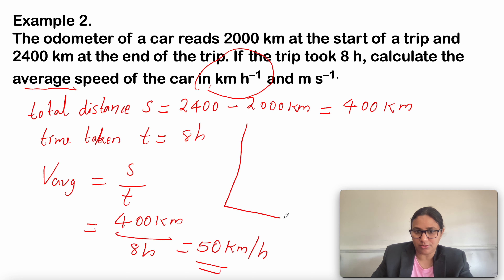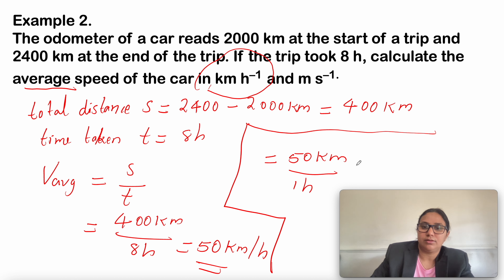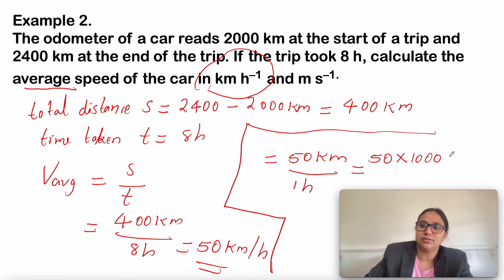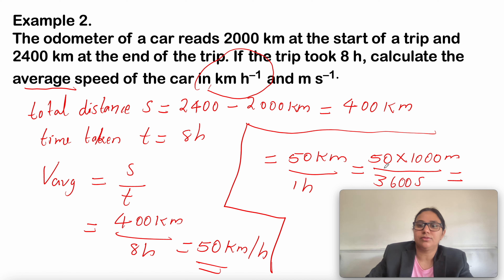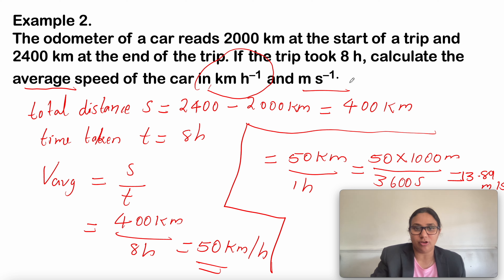Now we have to convert this into meters per second. 50 kilometers per hour equals 50 multiplied by 1000 meters divided by 3600 seconds, which gives 50,000 divided by 3600. The answer is 13.89 meters per second. So 50 kilometers per hour and 13.89 meters per second is the final answer.